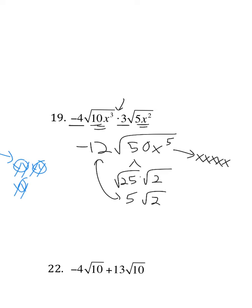And then I still have square root of 2. Don't forget, though, I still have a negative 12. They're right next to each other, so that means multiply. That gives me negative 60 and then square root of 2.